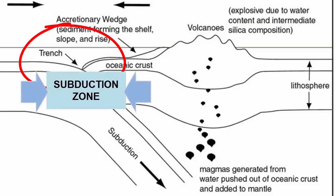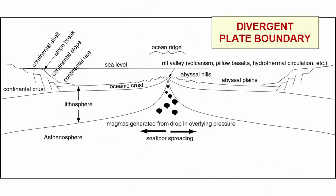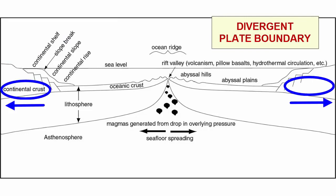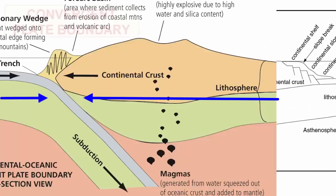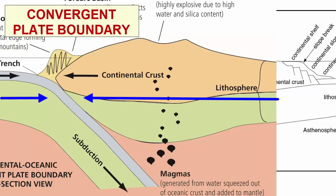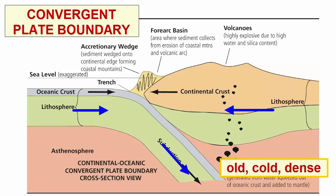At divergent plate boundaries, the plates move apart, and the old continental portions of these plates are now spreading further and further apart. Where continents are shoved towards other plates, they will collide at convergent plate boundaries. If continents collide with ocean plates, the ocean plate — being denser — will be forced under the continents. If the ocean crust is cold and dense, it will sink to the core-mantle boundary to be recycled.